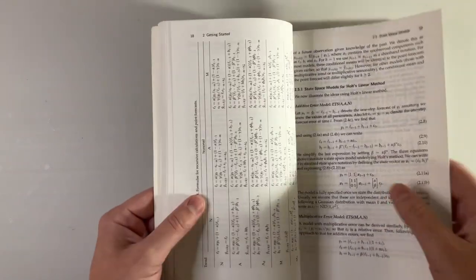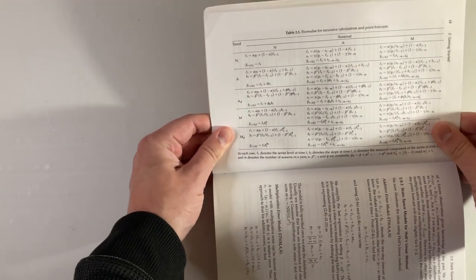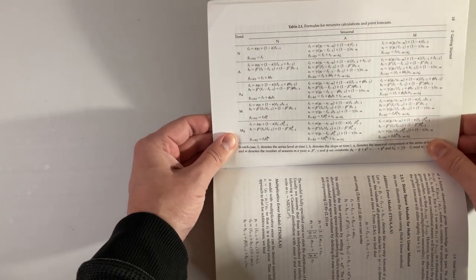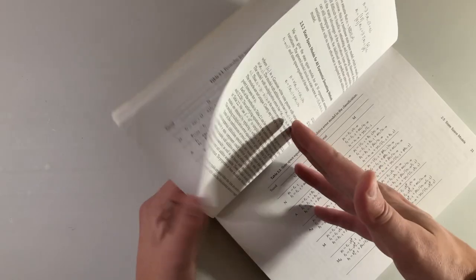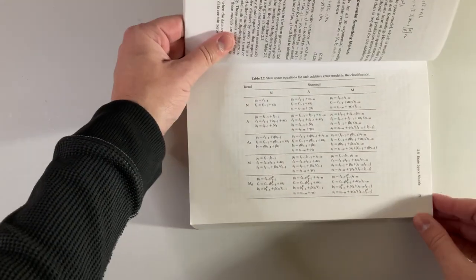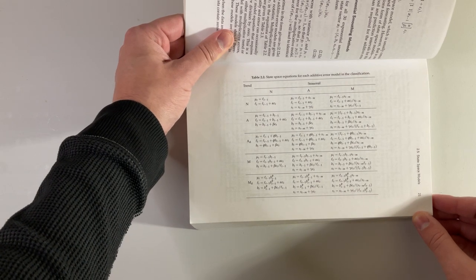One thing I appreciated was the recursive calculation tables. It was nice to be able to compare and contrast models with different trend and seasonality parameters, and how to factor in errors that were additive or multiplicative. Then I could compare state-space tables against the recursive formulas to see what the authors were bringing to the table.